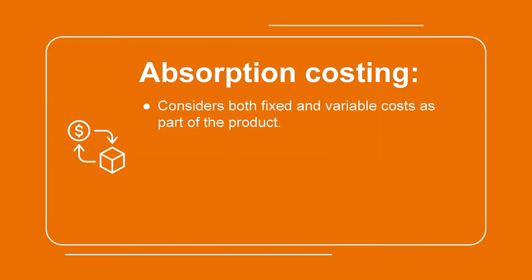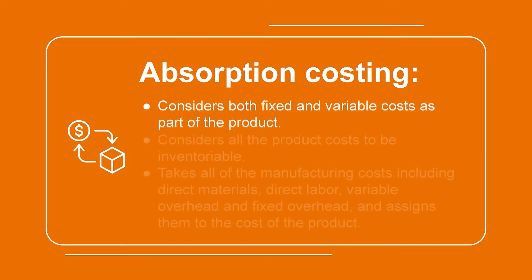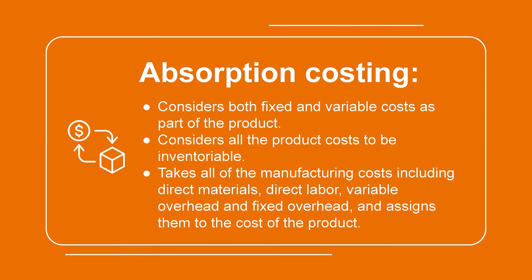Absorption costing factors in all product costs as part of the cost of the product. This includes both fixed and variable costs. This costing method takes all of the manufacturing costs, including direct materials, direct labor, variable overhead, and fixed overhead, and assigns them to the cost of the product. This includes fixed overhead costs such as rent or insurance that get allocated to each product on the basis of units produced.